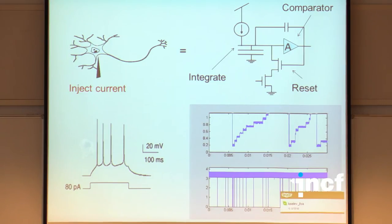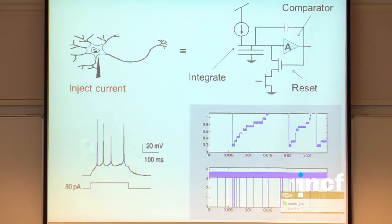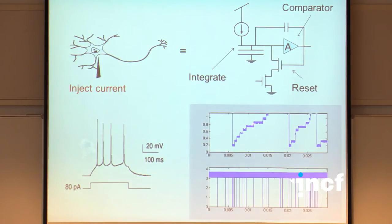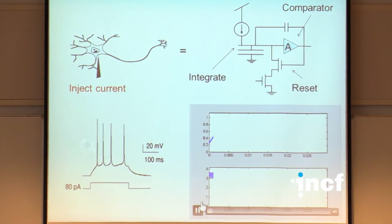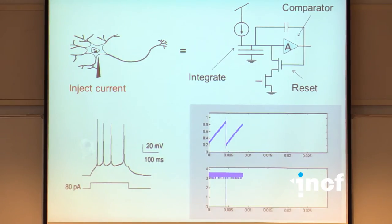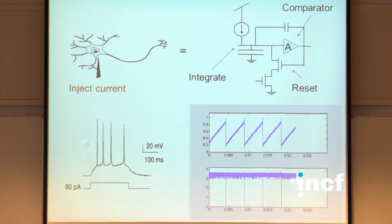A movie demonstrates one of the silicon neurons: Poisson-distributed input spikes come in (shown at the bottom), and the membrane potential builds up with each incoming spike. As soon as it reaches threshold, the neuron fires, resets, builds up again, fires, resets — and so on. You can see the output spikes generated as the membrane builds up and fires repeatedly.